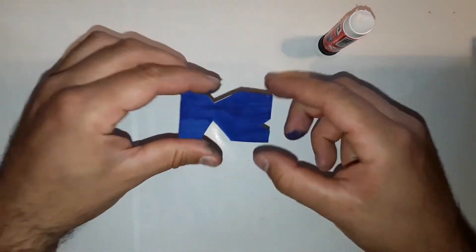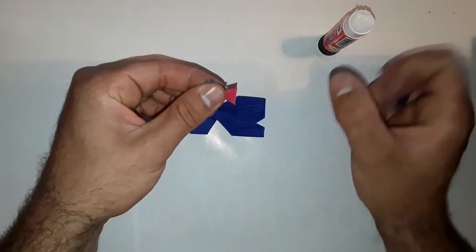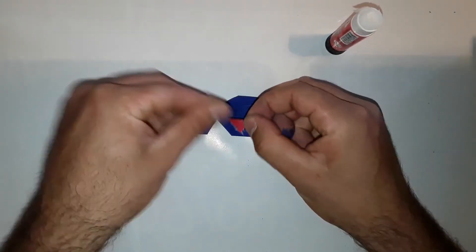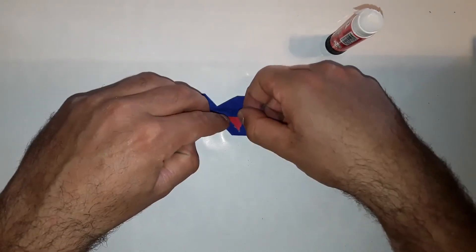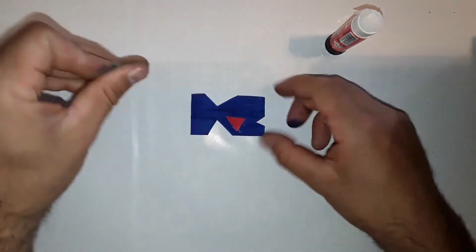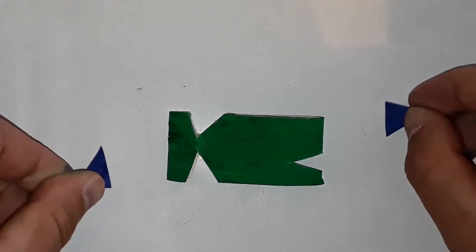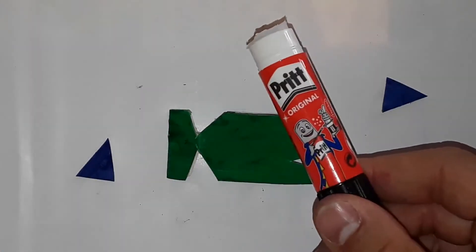Now turn the fish around and do the same on the other side. Repeat this process for the other two fish as well.